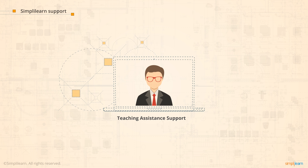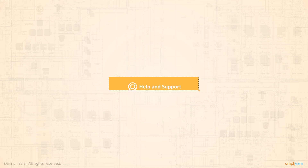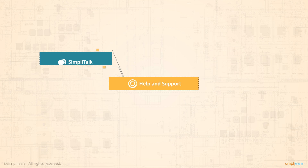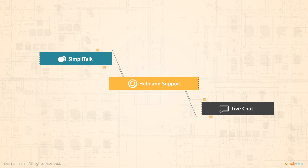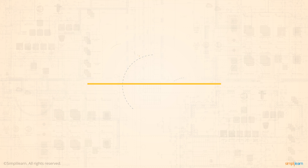You can reach out to our teaching assistant support staff anytime during the course and for assistance with projects. Candidates can submit their queries at Help and Support on our website, or they can get connected with our staff using Simply Talk and the live chat options. This concludes the course introduction and we hope you're all geared up to begin the AWS Solutions Architect Associate Level course. Happy learning!